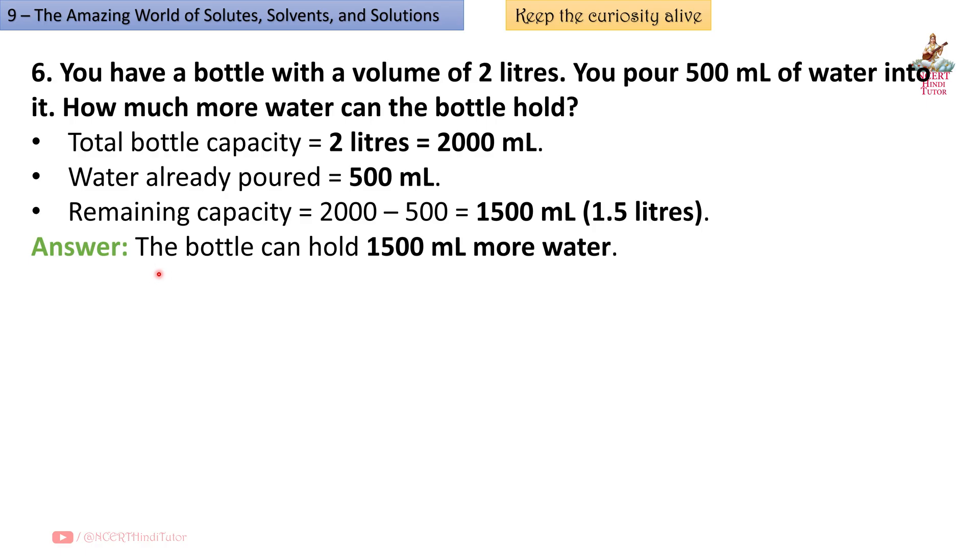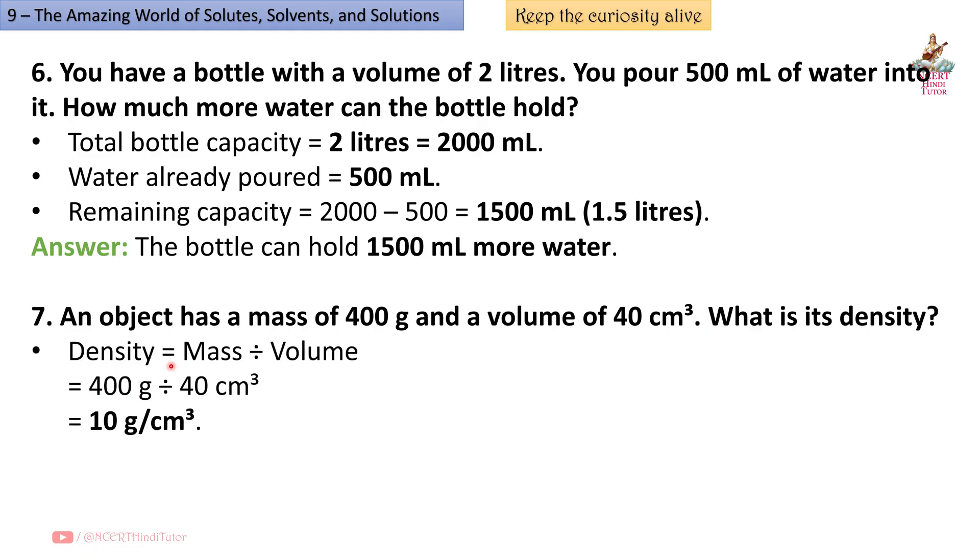Question 7: An object has a mass of 400 g and a volume of 40 cm cube. What is its density? So friends, we know density equals mass divided by volume. So mass is 400, so 400 divided by 40 which is volume equals 10 g per cm cube. So the density of the object is 10 g per cm cube.